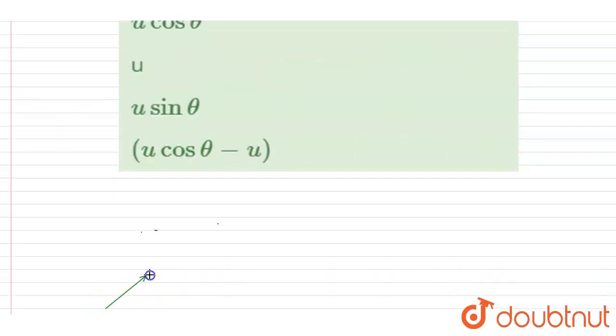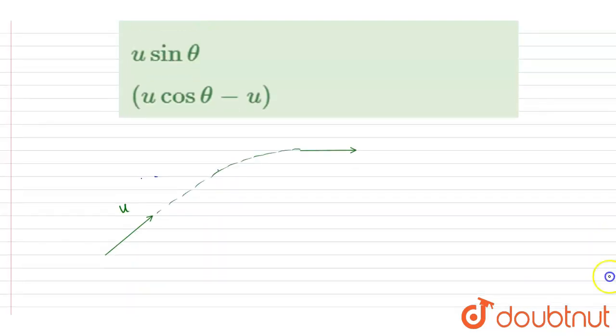It was projected at an angle theta with velocity u. At the highest point it will be having some velocity like this. So if you see here, this component, it will be having some component, let's say this.